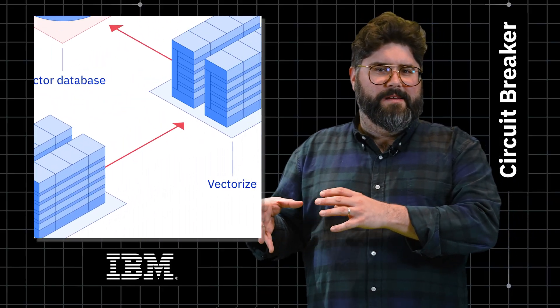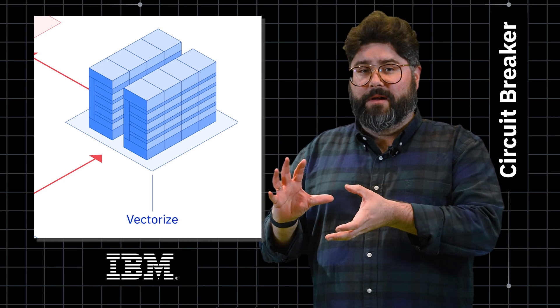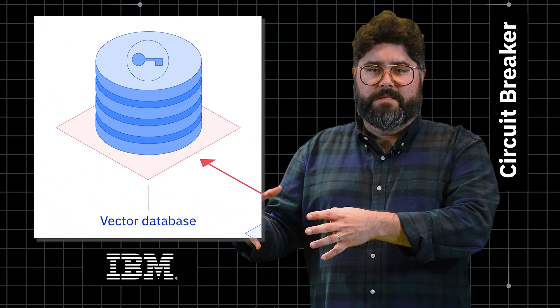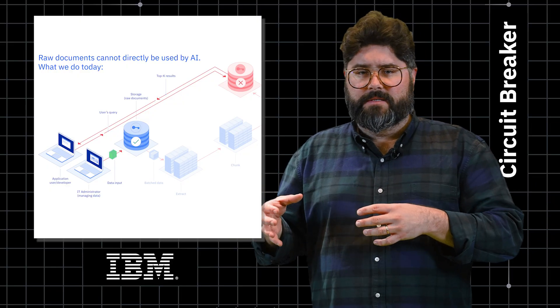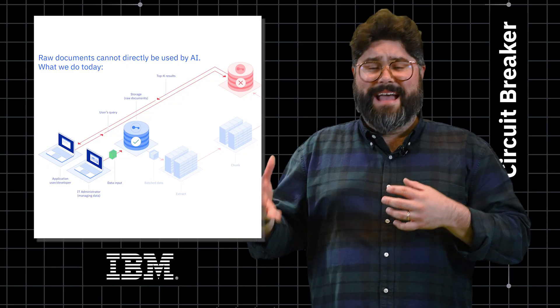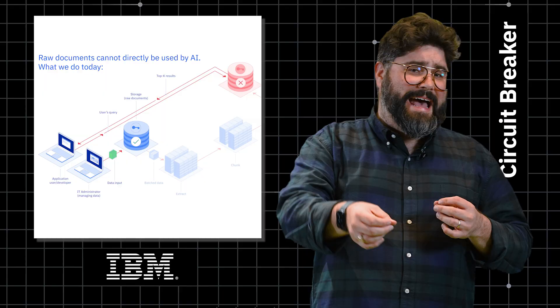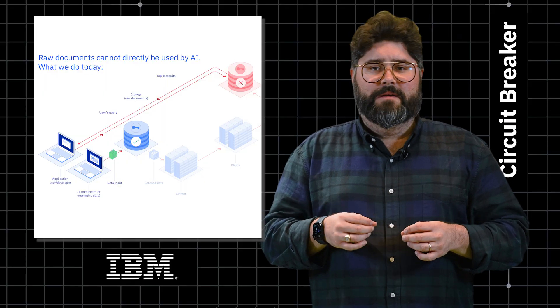Then you vectorize that information so it can be used by AI models and store it in a new database. And now you're managing two databases with two sets of security clearances and having to figure out what's already been vectorized whenever information is added or removed from a database.